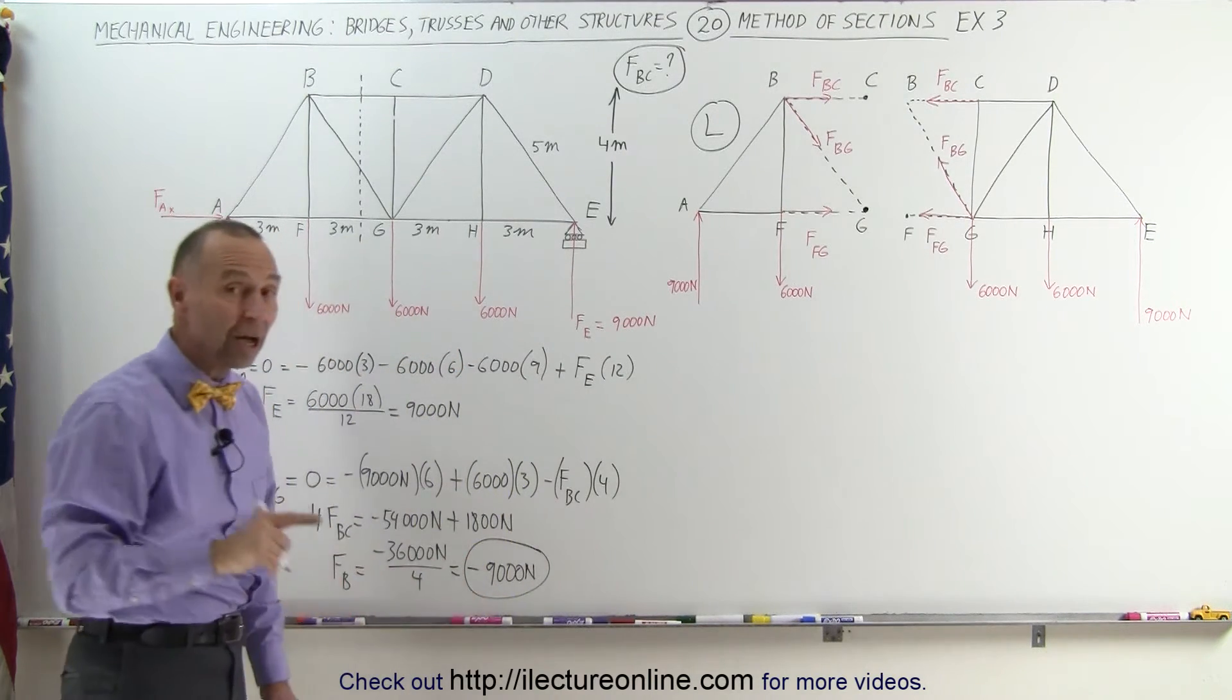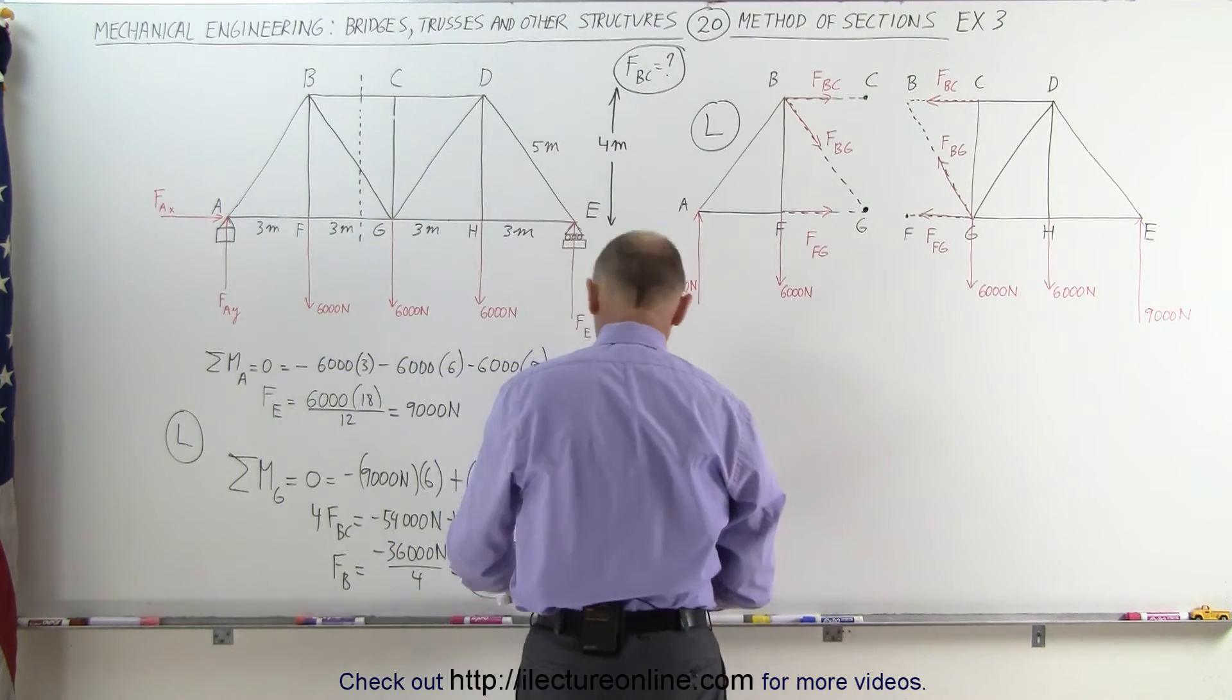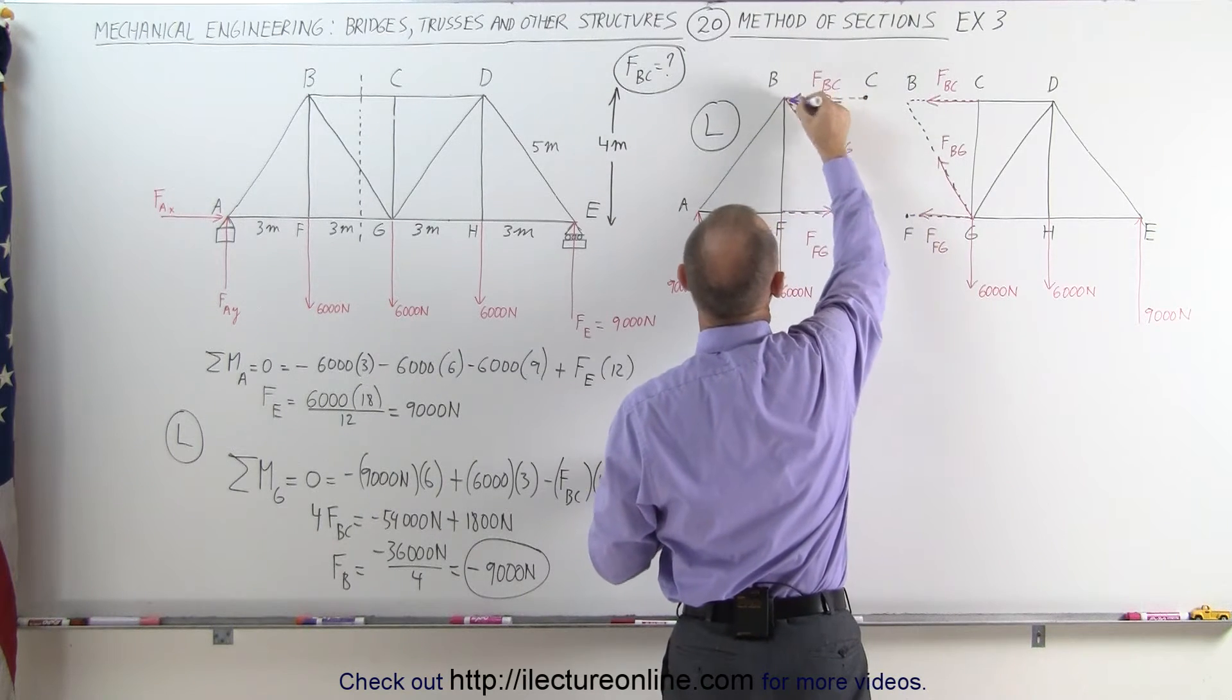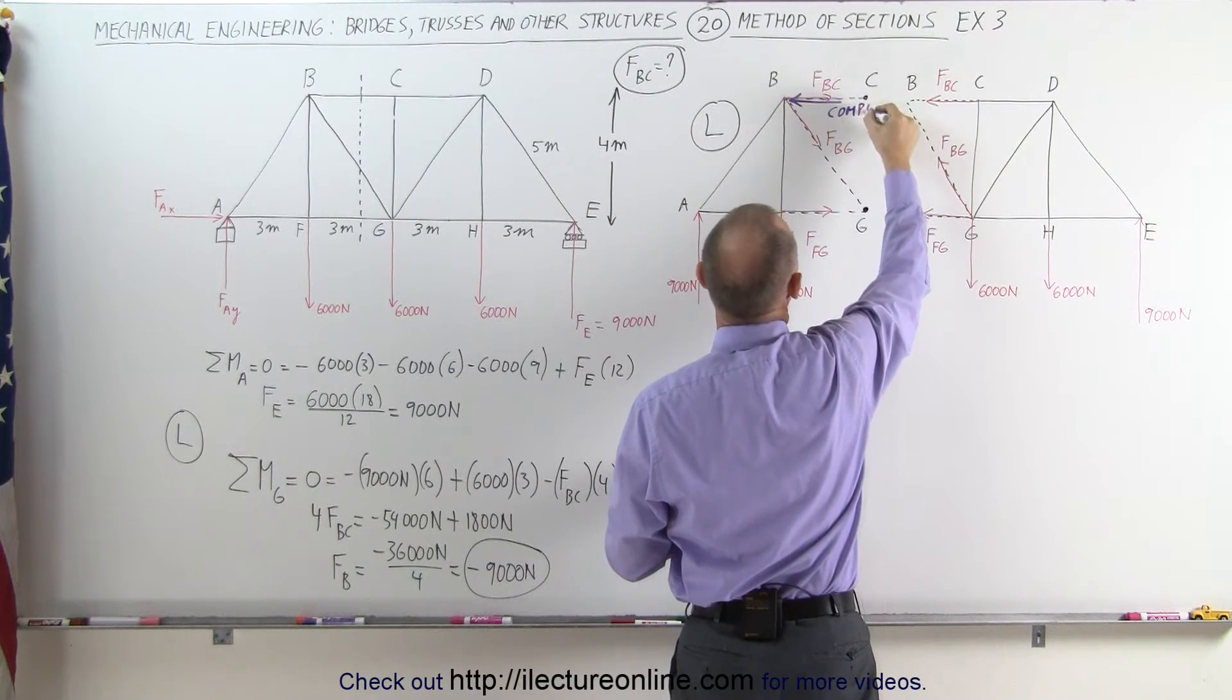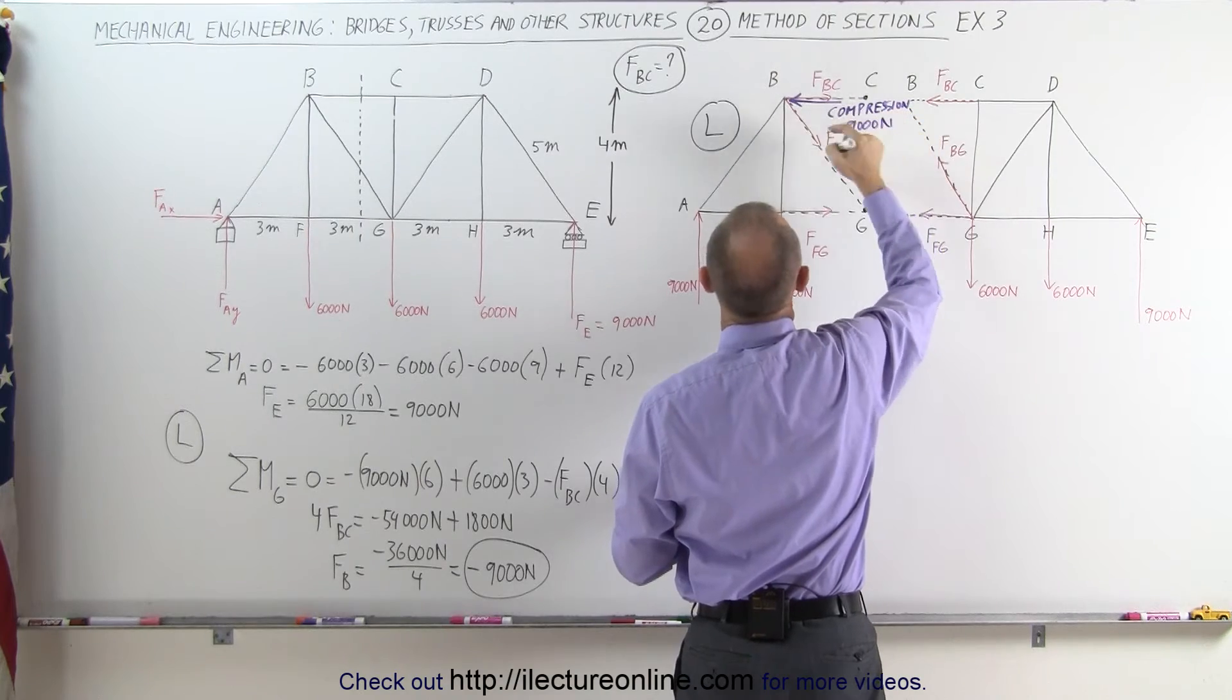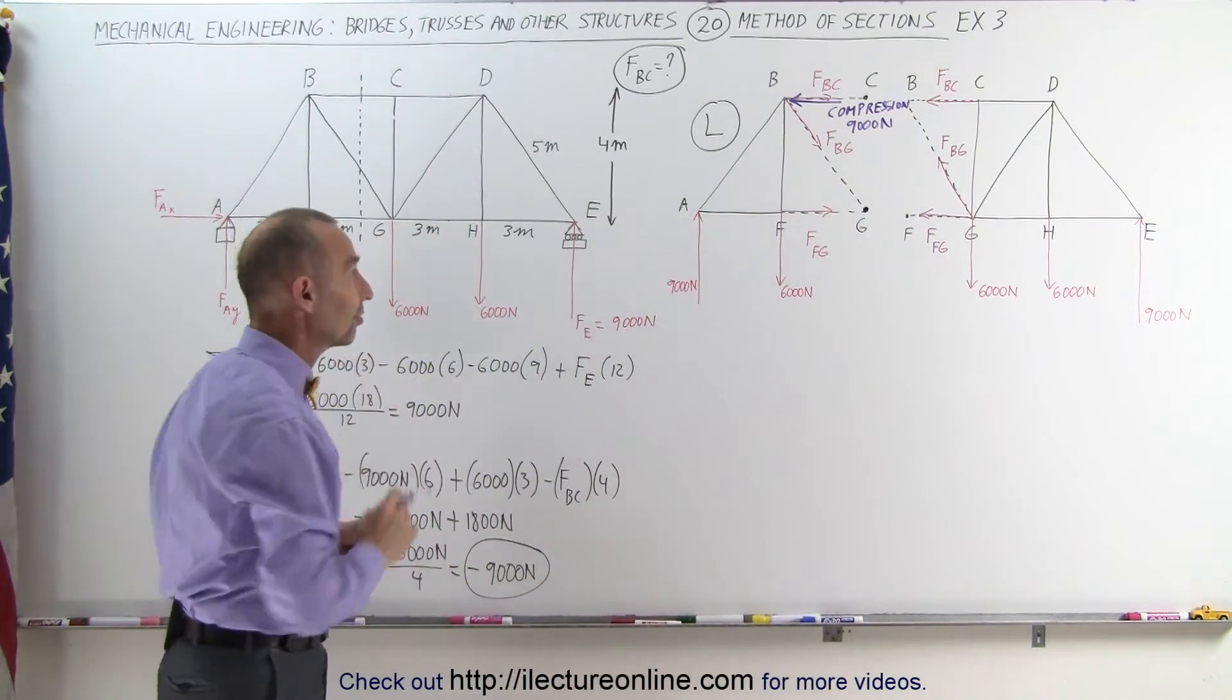Minus indicates that we have the opposite direction of what we should have. We drew FBC in that direction, but in essence we know that FBC should be in this direction, that means it's a force of compression. This member here from B to C is under compression, and we have a force of 9,000 Newtons on that beam between B and C. That's how we got that number using the left section of the bridge. Now use the right section of the bridge, and we should get the exact same answer.